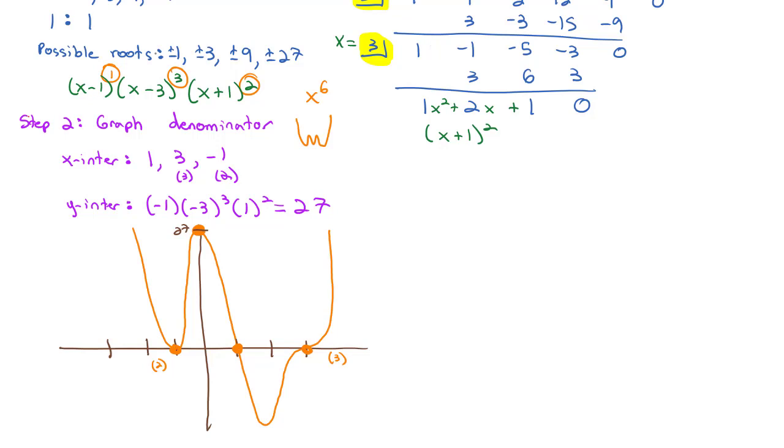So that's step 2, graphing the denominator. Once I've graphed the denominator, I can move on to step 3, and I can graph the reciprocal. We're going to graph 1 over x minus 1 times x minus 3 cubed times x plus 1 squared.